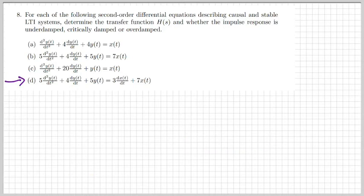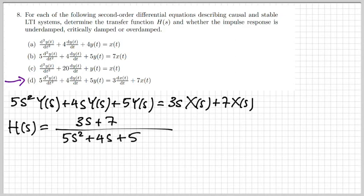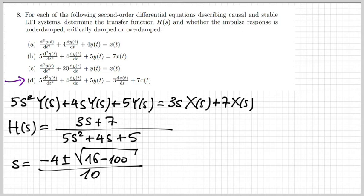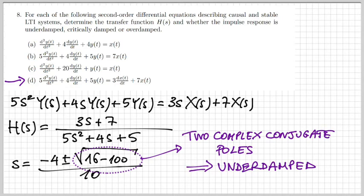Finally, in part D there is another second-order differential equation — a little bit longer, so a few more calculations, but the result is similar. Studying the roots of the denominator, there is a negative number under the square root, meaning there will be an imaginary part. So we have two complex conjugate poles and the system is underdamped again.